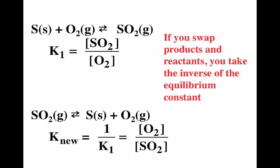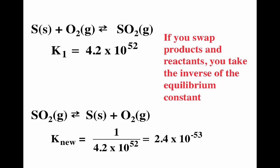If we take that reaction and swap it — SO2 goes from being a product to a reactant, and sulfur and O2 go from reactants to products — notice what happens to the equilibrium expression. Now we have O2 over SO2. If you swap products to reactants, you have to take the inverse of the equilibrium constant. This makes a lot of sense: for the top reaction the products are a lot more stable, giving a very large equilibrium constant; for the bottom one the reactants are a lot more stable, giving a much smaller equilibrium constant. Whatever is on the right-hand side of the equilibrium arrows is defined as products; whatever is on the left-hand side is defined as reactants.